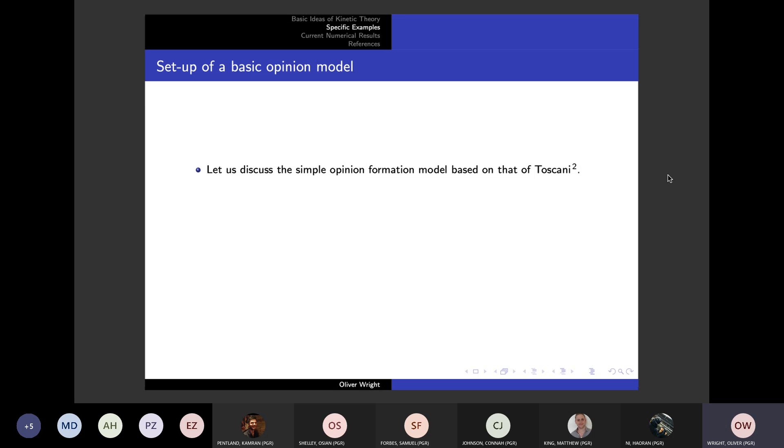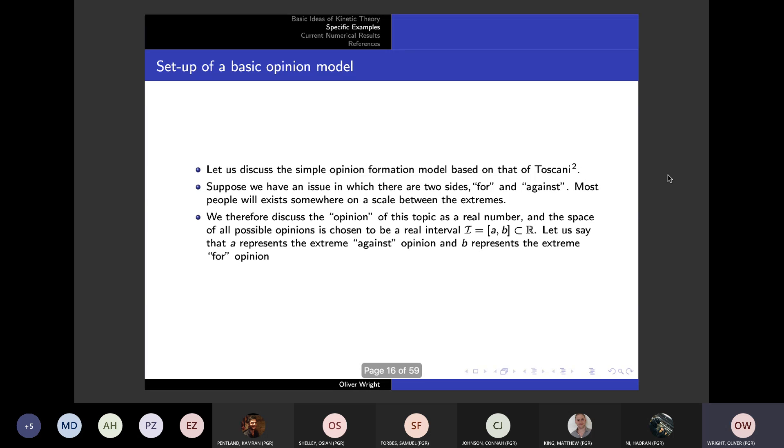In terms of the socio-economic context, we generally discuss the idea of having some kind of issue that has two sides. Most people will exist somewhere on a spectrum between those two extremes. In an election in America, you will have Republicans and Democrats, and most people will exist between the extremes. We tend to discuss the opinion as an actual real number that exists on an interval.